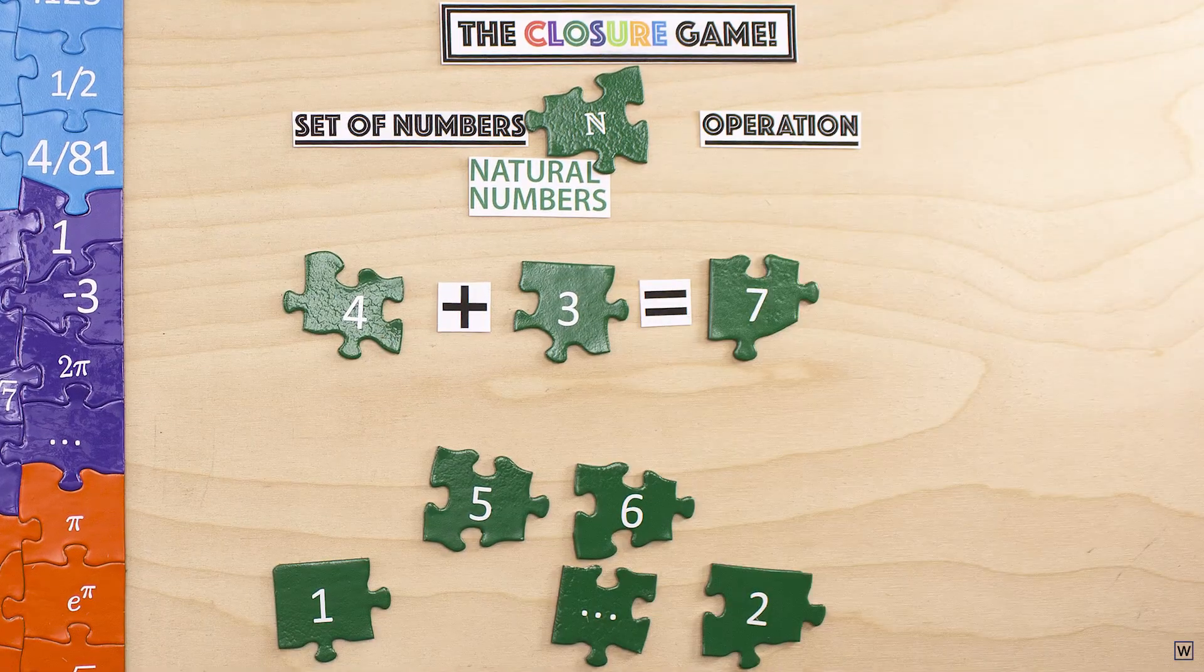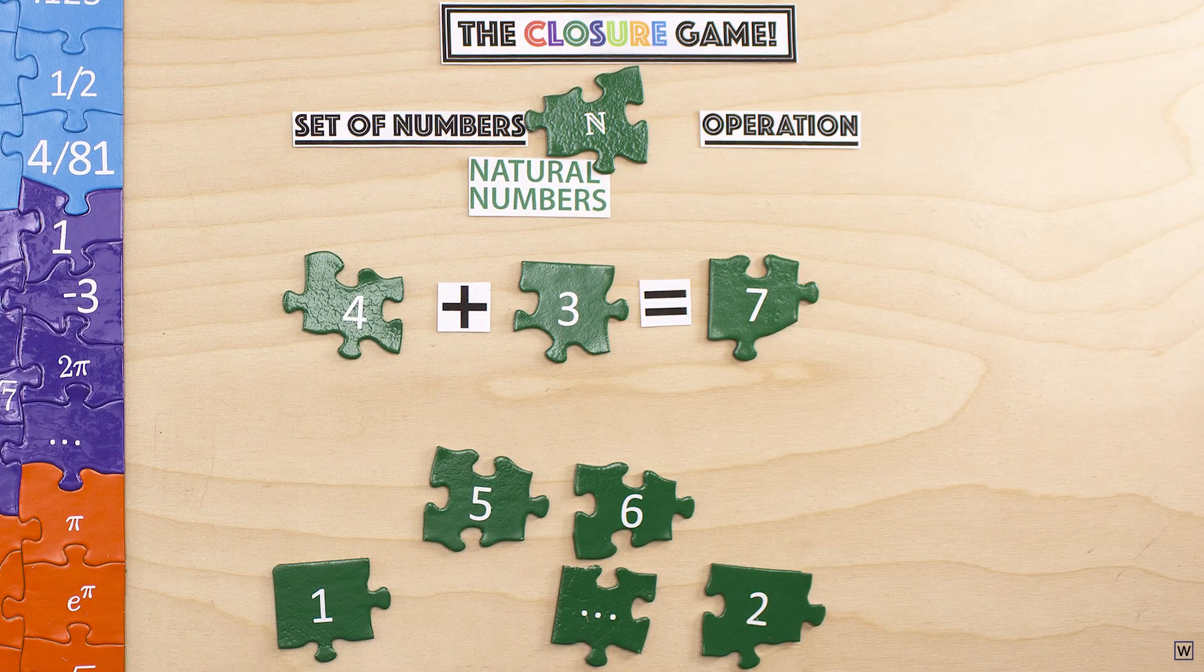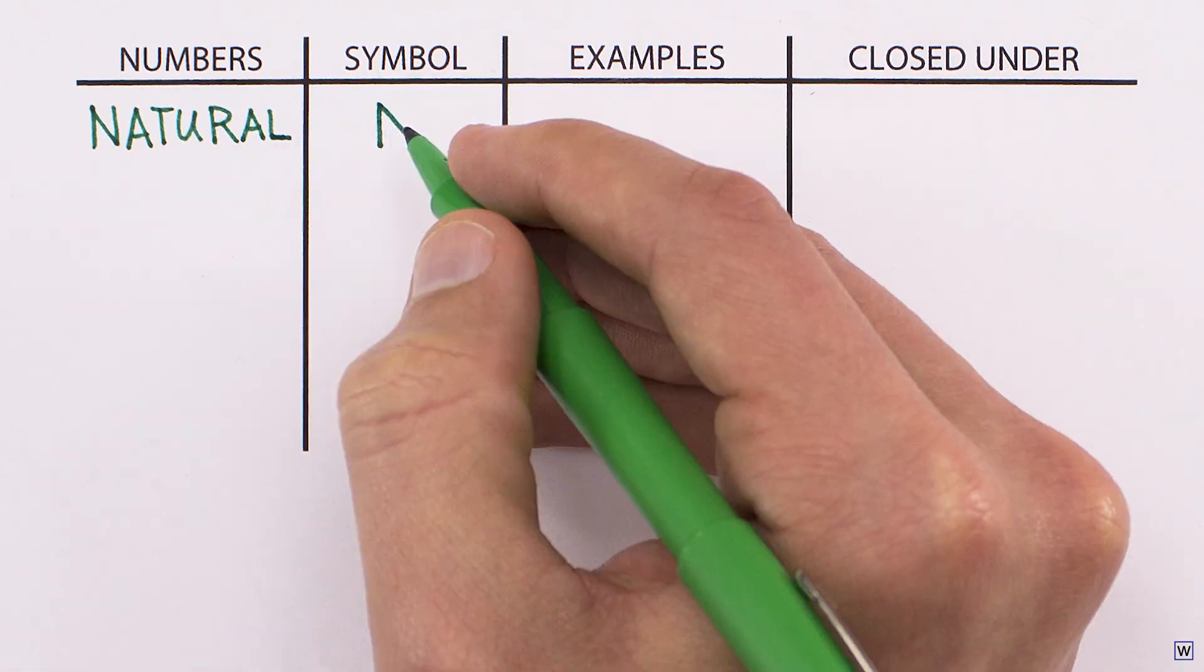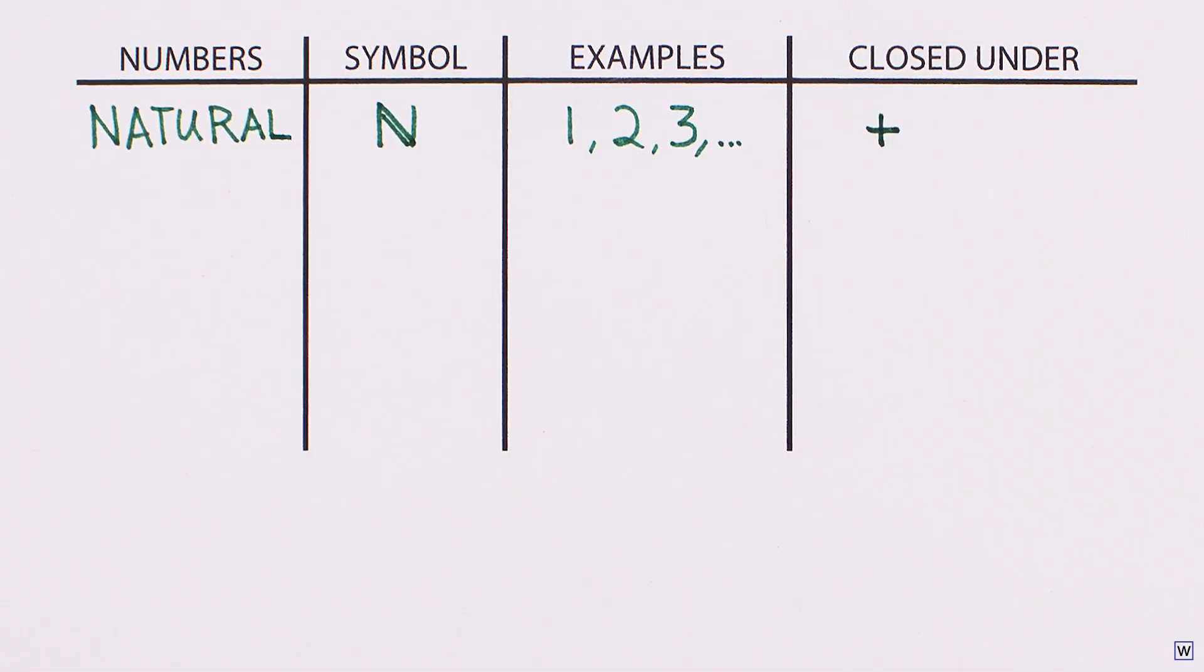After a little noodling, it should seem pretty reasonable that any two natural numbers, added together, result in another natural number. Mathematically, we can say that the set of natural numbers is closed under addition.